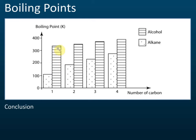We can see that the boiling points of alcohols are much, much higher than the boiling points of alkanes. For example, methane has a boiling point of about 110°C, but methanol is about 340°C. The structure and size of alcohol molecules are about the same as alkanes, so you might expect the boiling points to be similar, but they are not.